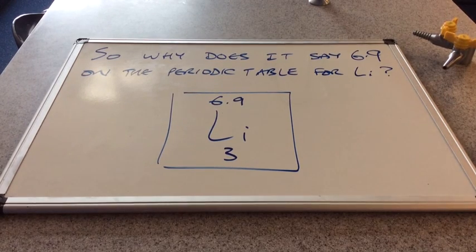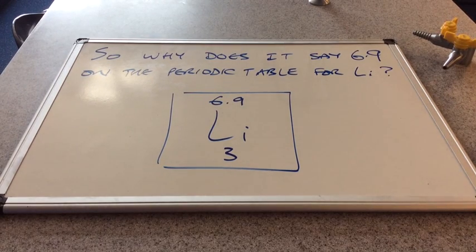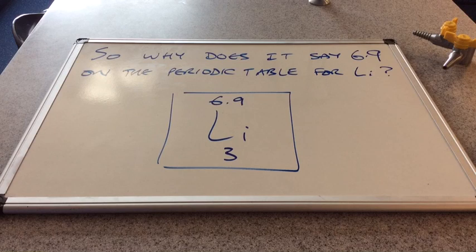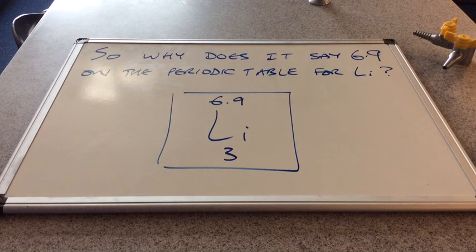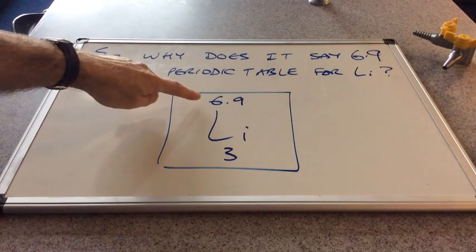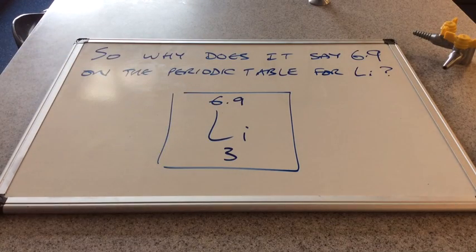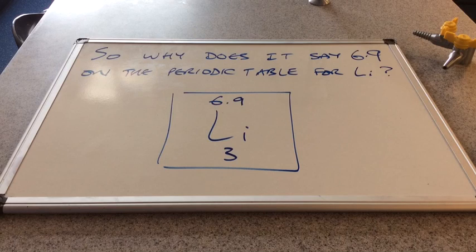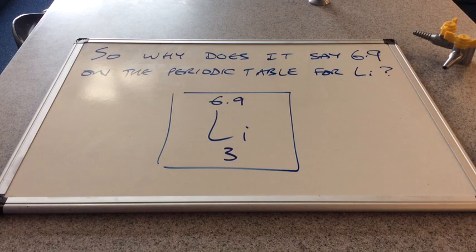In the previous video we were looking at atomic structure and establishing the masses of the subatomic particles - the protons, neutrons and electrons. We finished off the video looking at lithium, using a number 7 for the mass number. Now we're looking at what's actually on the periodic table. So why does it say 6.9 on the periodic table for lithium and not actually 7?